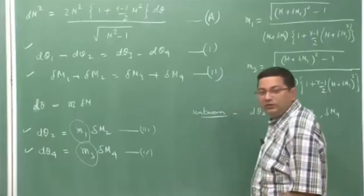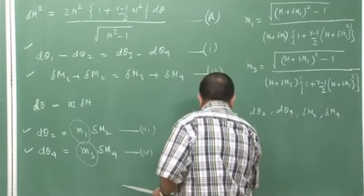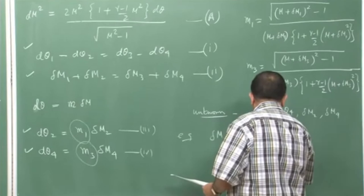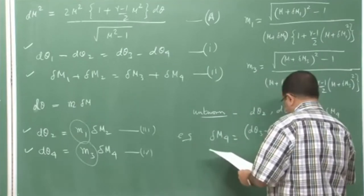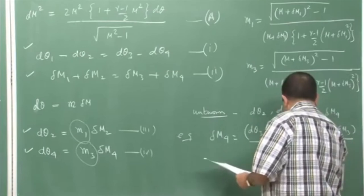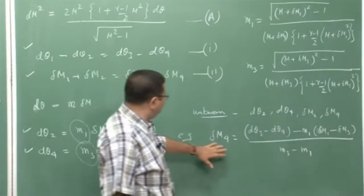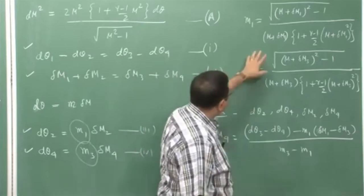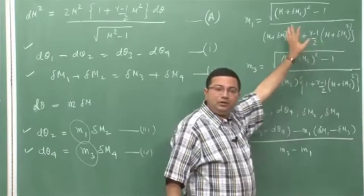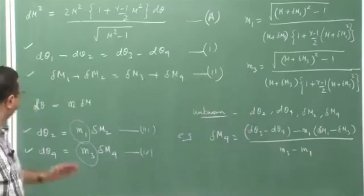For example, delta_M_4 = (result from the 4 equations) divided by (m3 − m1). From these 4 equations this is the value of delta_M_4. Once again, m1 and m3 are functions of the incoming Mach number and the first change, which is known. So delta_M_1 and delta_M_3 are known in this equation, therefore m3 and m1 are known, and I can get the change in Mach number after it crosses the second Mach line.